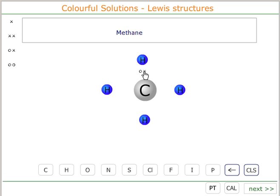Now each hydrogen is sharing one pair of electrons, one electron from the hydrogen and one from the carbon.